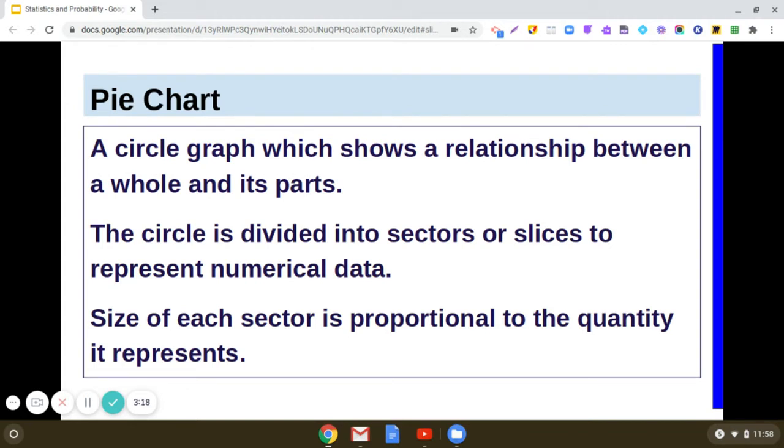When we make a pie chart, the circle is divided into sectors. We call them slices for representing the numerical data, and the size of each sector is proportional to the quantity it represents.